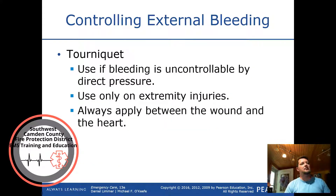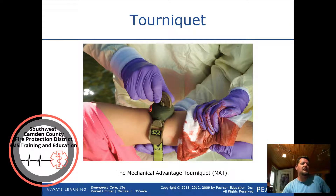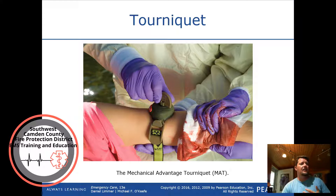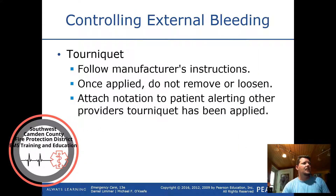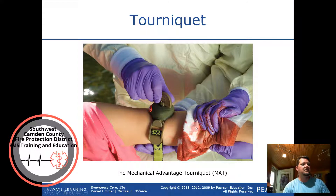Use a tourniquet if bleeding is uncontrollable by direct pressure. Only use on extremity injuries and always apply between the wound and the heart. EMS services typically carry a CAT tourniquet or SWAT-T tourniquet. Follow manufacturer's instructions and once applied, do not remove or loosen. Attach a notation to the patient alerting other providers that a tourniquet has been placed. The tourniquet should be placed at least two inches above the wound.